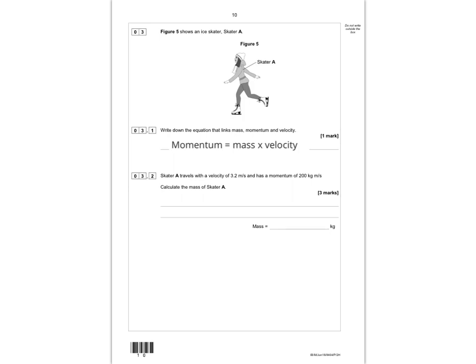Skater A travels at 3.2 metres per second and has a momentum of 200 kilogram metres per second. Calculate the mass of skater A. Write p = mv, substitute: 200 = m × 3.2, rearrange to m = 200 ÷ 3.2, giving m = 62.5 kg, which rounds to 63 kg to two significant figures. You get one mark for substituting numbers, one for rearranging correctly, and one for the correct answer. An answer of 62.5 is also accepted.